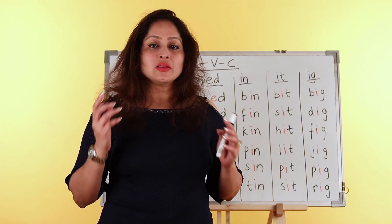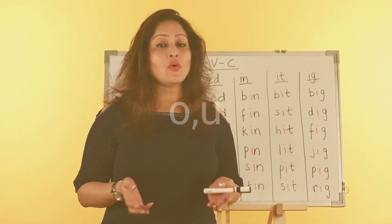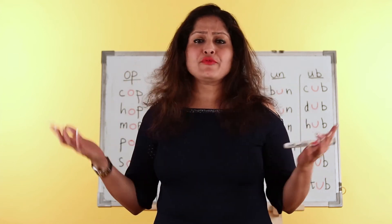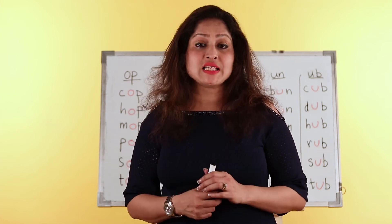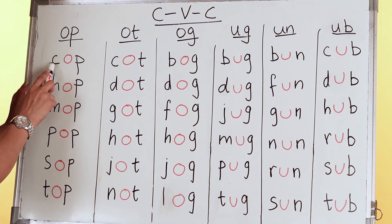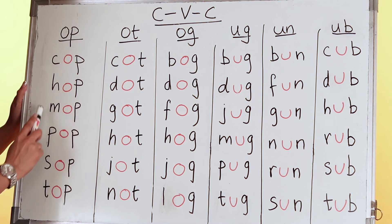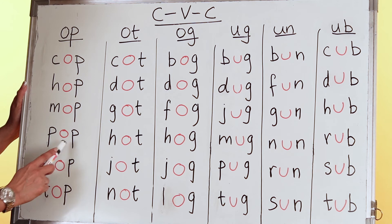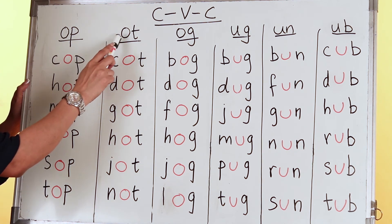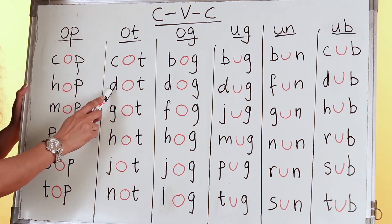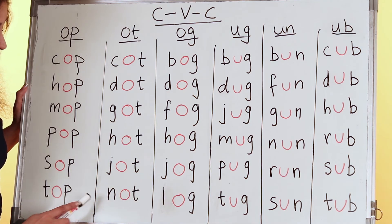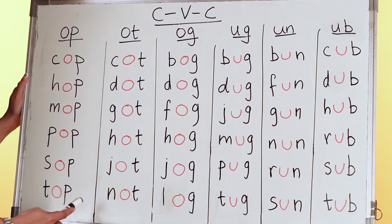Those were some word families with the vowels E and I. Next we are going to see the vowels O and U. O says 'o' as in 'on,' and U says 'u' as in 'up.' Let's look at the OP family: COP, HOP, MOP, POP, SHOP, TOP. The next family with O is OT: COT, DOT, GOT, HOT, JOT, NOT. You can add more letters to make words like TOT and POT.